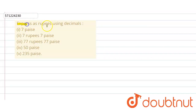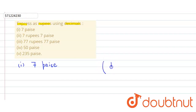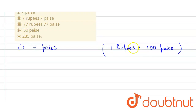In the given question, we have to express the following in terms of rupees using decimals. The first part is 7 paise. We use the conversion that 1 rupee equals 100 paise.